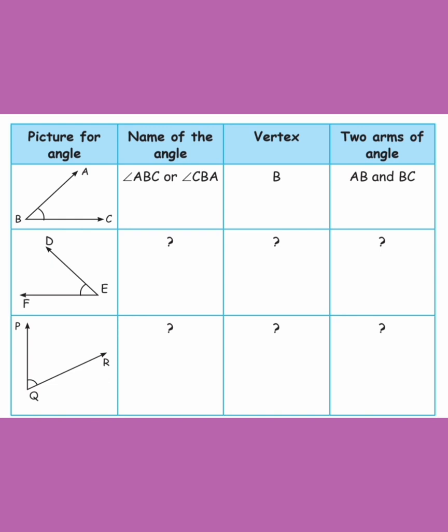Where we use the angle notation: angle A, B, C can also be written as angle C, B, A. The vertex B is the middle letter. The two arms are the two segments meeting at the vertex. For angle A, B, C, the vertex is B and the two arms are A, B and B, C.